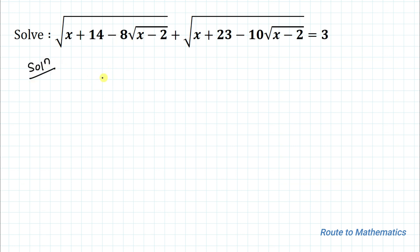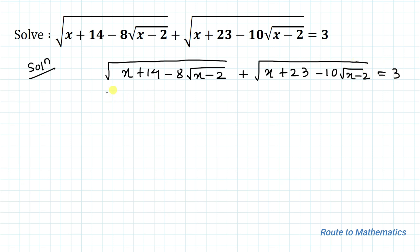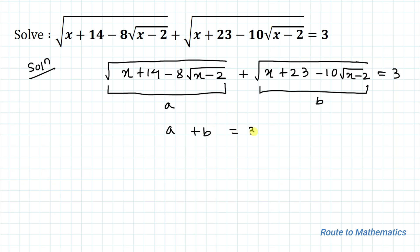So the given equation is √(x + 14 - 8√(x-2)) + √(x + 23 - 10√(x-2)) = 3. In the next step we are going to take the first term as a and the second term as b, so our equation becomes a + b = 3.